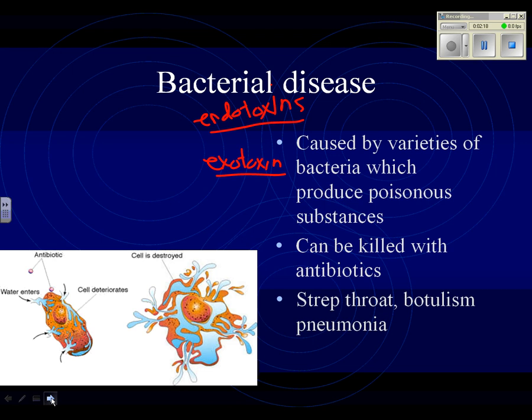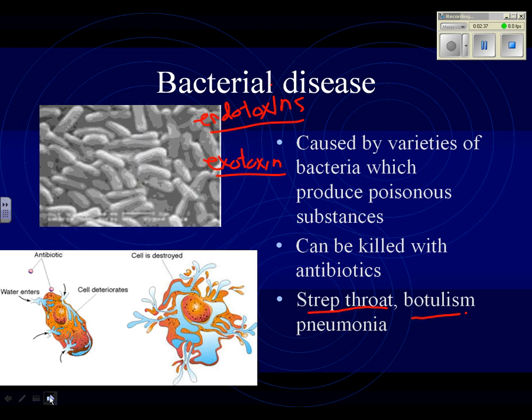Some examples of bacterial disease: strep throat is caused by streptococcus bacteria; botulism, a form of food poisoning, is a bacterial disease; and pneumonia. Bacteria are extraordinarily small, single-celled organisms, most of which cause us no harm — they're extremely common — but a very few of them cause disease.